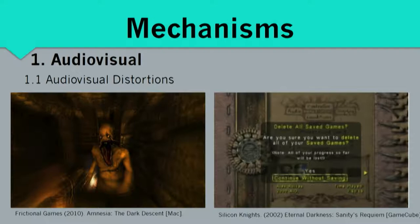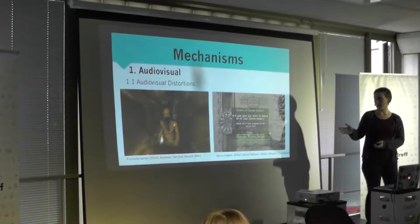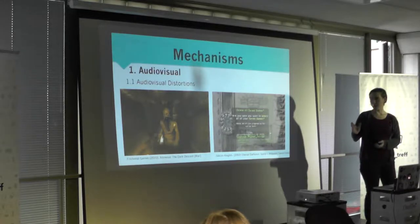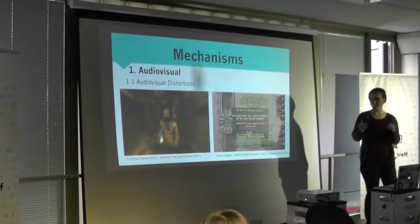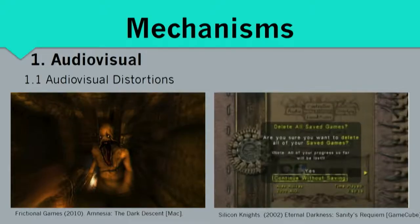The first mechanism is audio-visual disempowerment. For example, audio-visual distortions — like in Amnesia: The Dark Descent, where you can see things that aren't really there, the screen gets blurry, and it plays with the light. On the right is Eternal Darkness: Sanity's Requiem, which has the so-called sanity effects that create in-game hallucinations.